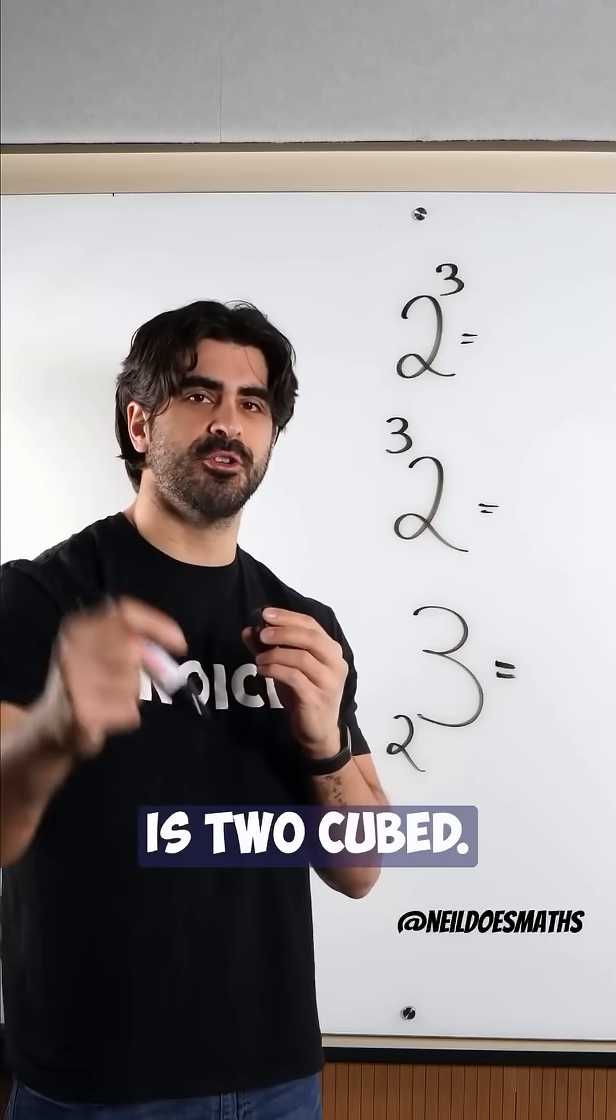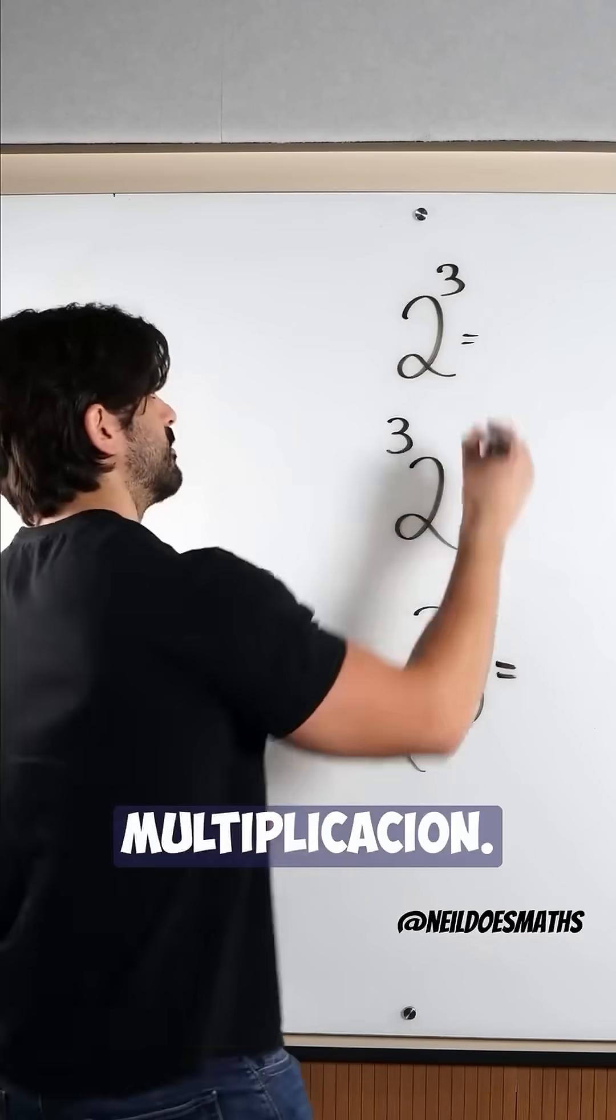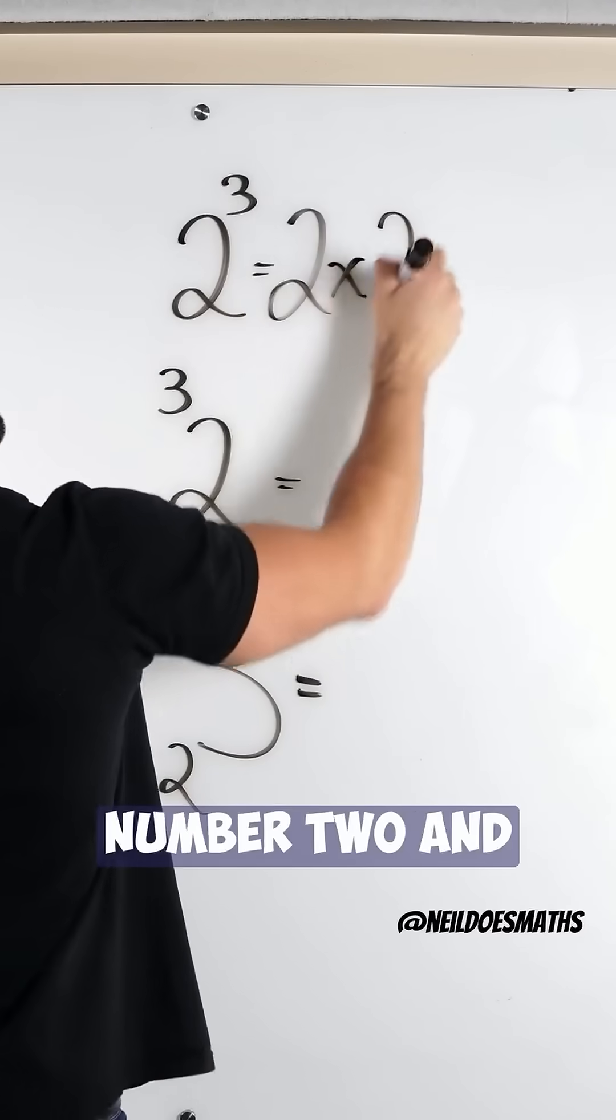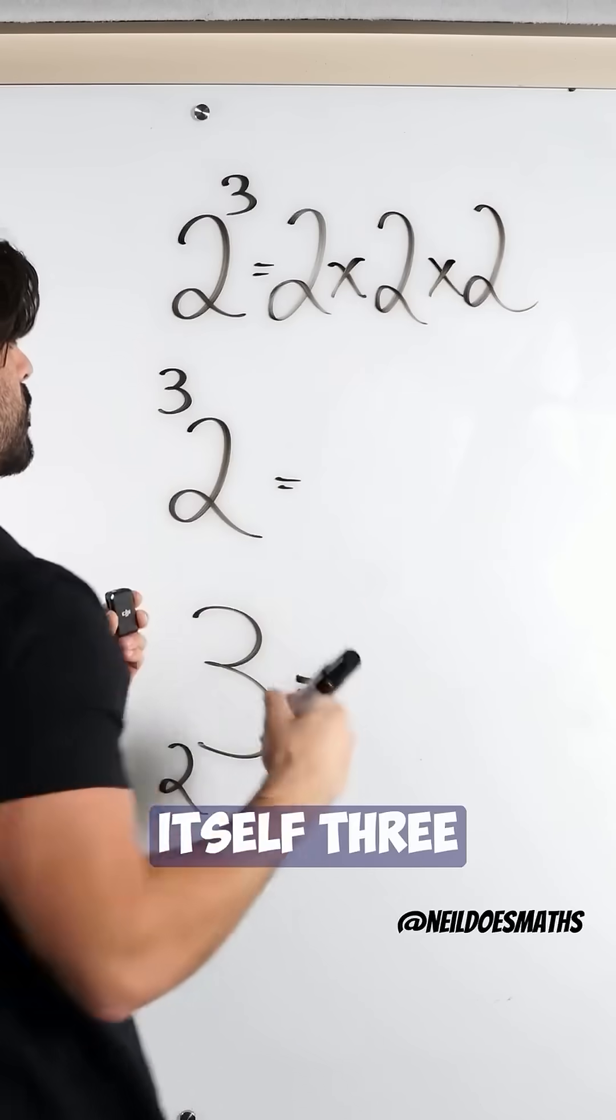Take a look at these examples. The first one is two cubed. Cubing means repeated multiplication. You're taking the number two and multiplying it by itself three times.